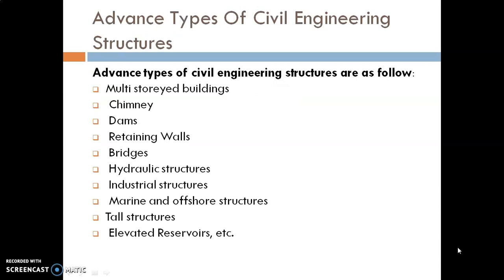Advanced types of civil engineering structures include: multi-story buildings, chimneys, dams, retaining walls, beaches, hydraulic structures, gates, canal siphons, canal aqueducts, barrages, industrial structures, marine structures such as docks, harbours, and jetties, and tall structures like communication towers and reservoirs.